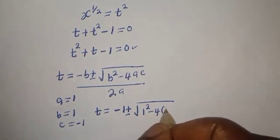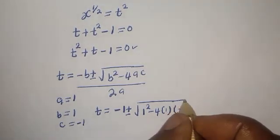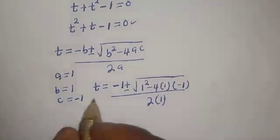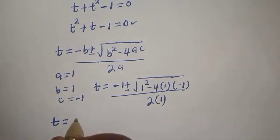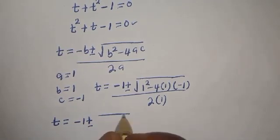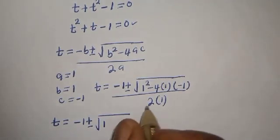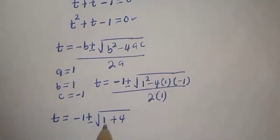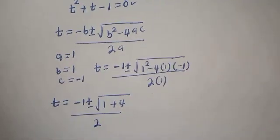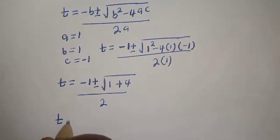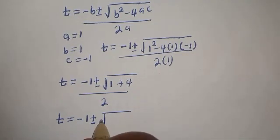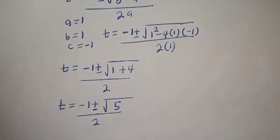So, t is equal to minus 1 plus or minus square root of 1 squared minus 4 multiplied by 1 multiplied by minus 1, over 2 multiplied by 1. That gives minus 1 plus or minus square root of 1 plus 4, which is square root of 5, over 2.